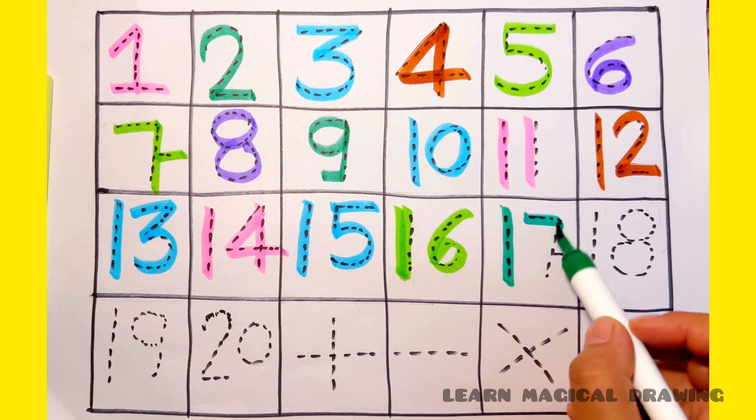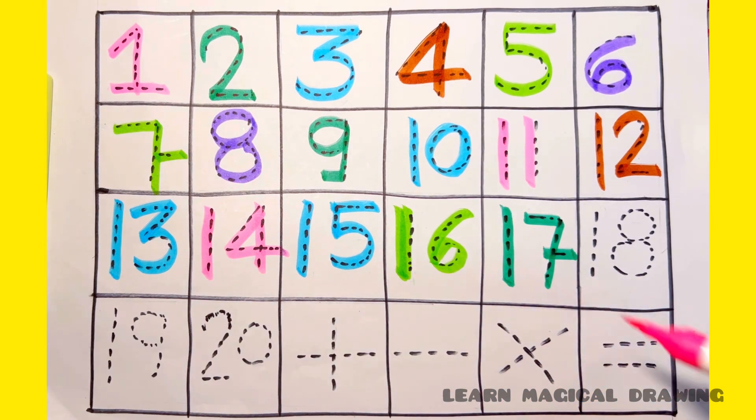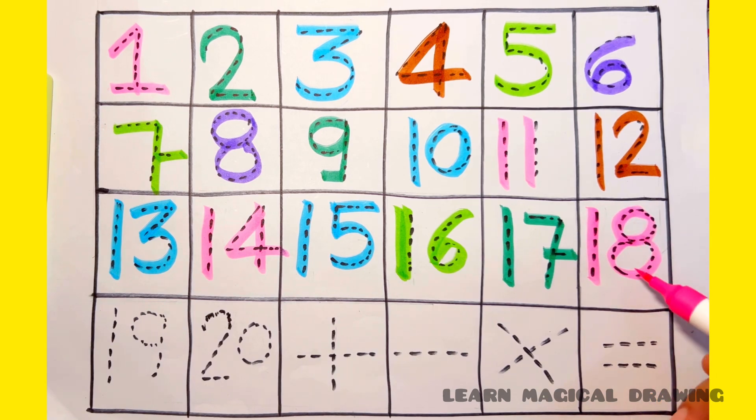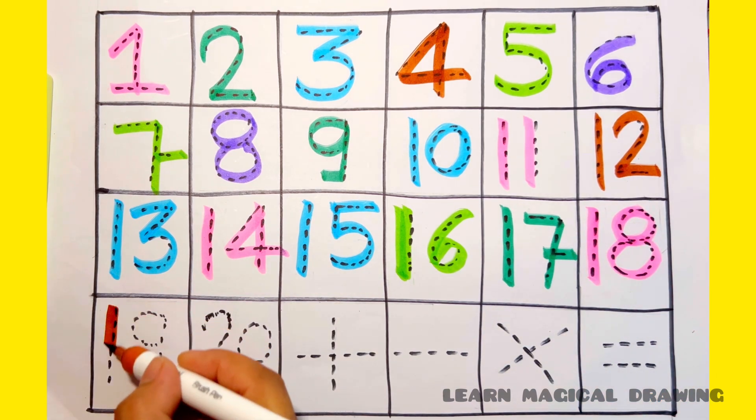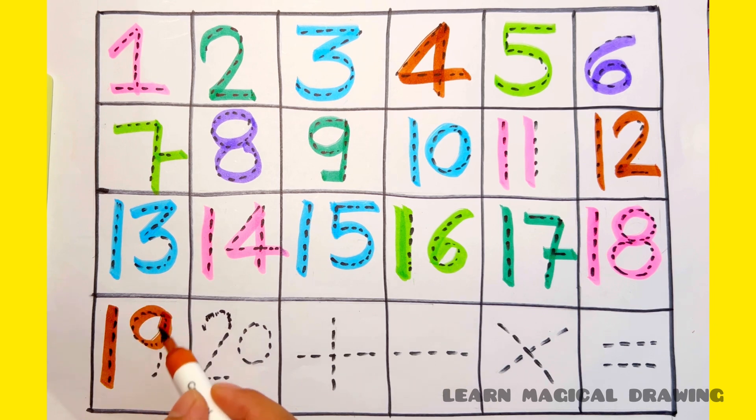One, seven, seventeen. One, eight, eighteen. One, nine, nineteen.